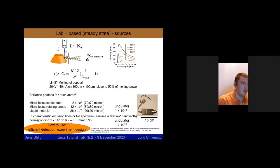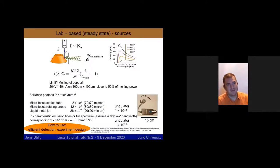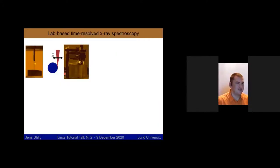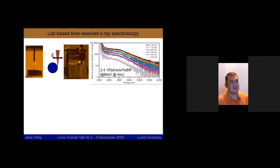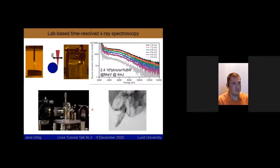Coming from a time-resolved field, I built a time-resolved source working on the same principle. I use a laser, focus it on a water jet, produce an electric field, accelerate electrons, and generate the same kind of broad bremsstrahlung spectrum with very similar photon numbers — roughly the same order of magnitude per eV. The key of using these types of setups is therefore the detection.